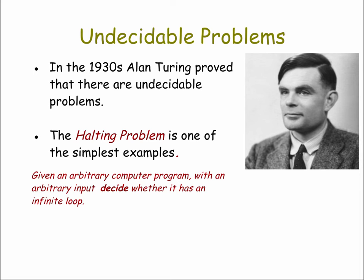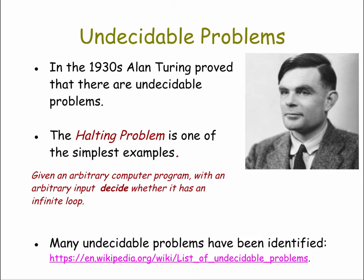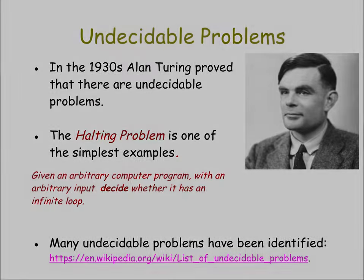The proof focused on a problem that's very easy to state: the so-called halting problem. Given an arbitrary computer program with an arbitrary input, decide whether or not it has an infinite loop. This problem can be solved for certain small programs, but in general there is no way to solve it for any program and any inputs — and that's what Turing proved. It was quite a revelation, because at the time it was thought algorithms could solve any problem. Computer scientists have identified many undecidable problems, and you can look at the Wikipedia page to see a list of them.